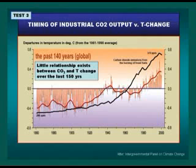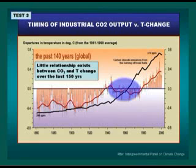Test number three is a cause and effect one. We say that increasing carbon dioxide in the atmosphere is going to cause the temperature to go up, so we compare those two curves. The red curve is the IPCC temperature curve from 1860 through to 2000, and the black curve is the ramping up of carbon dioxide. What we see is that at precisely the time after the Second World War that carbon dioxide emissions are increasing at their greatest rate, the temperature goes down. So test number three: there is very little correlation between these two curves, and that cause and effect just doesn't work.